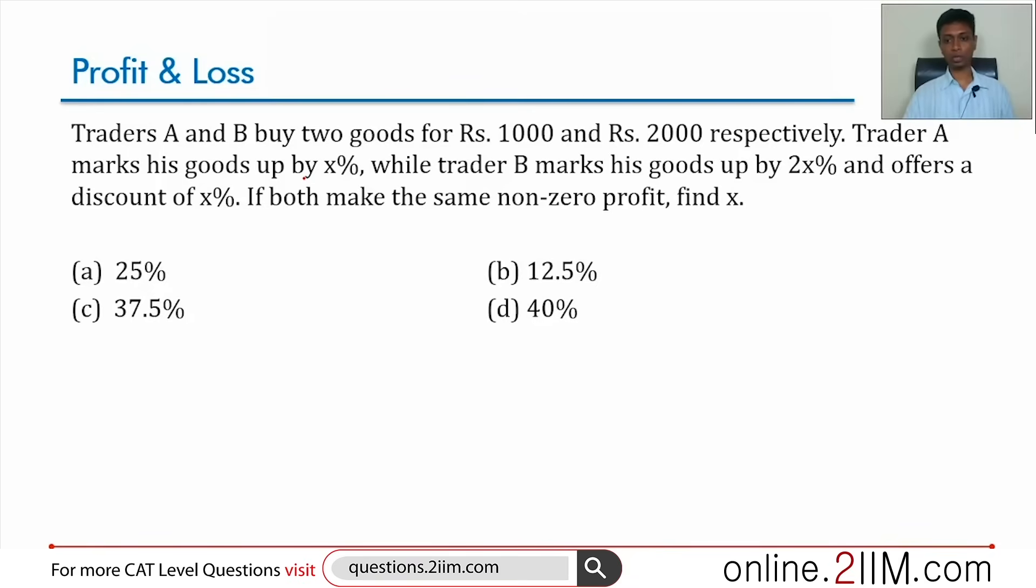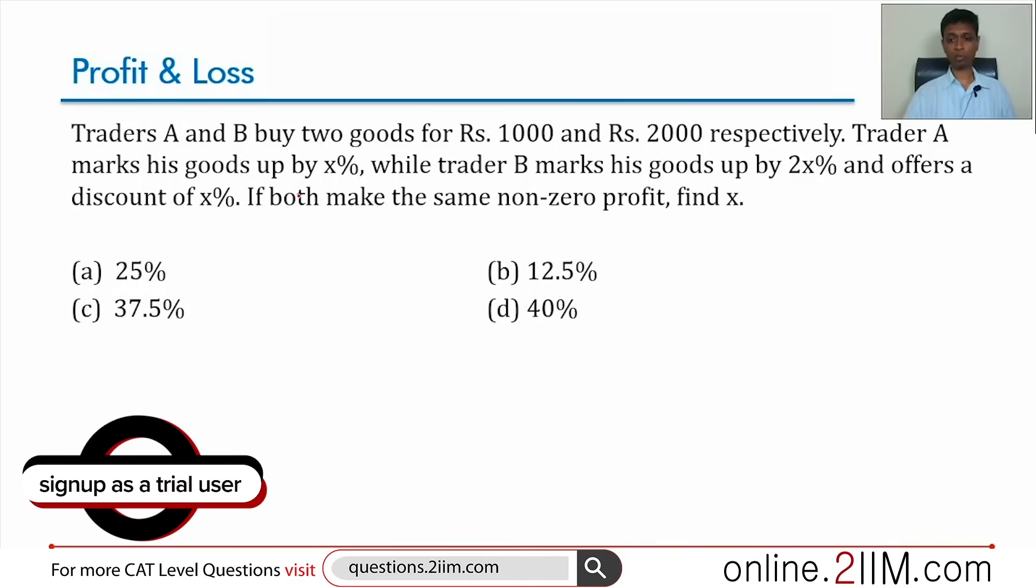A and B buy goods for rupees 1000 and 2000 respectively. Trader A marks his goods up by X percent while trader B marks his goods up by 2X percent and offers a discount of X percent. If both make the same non-zero profit, find X.